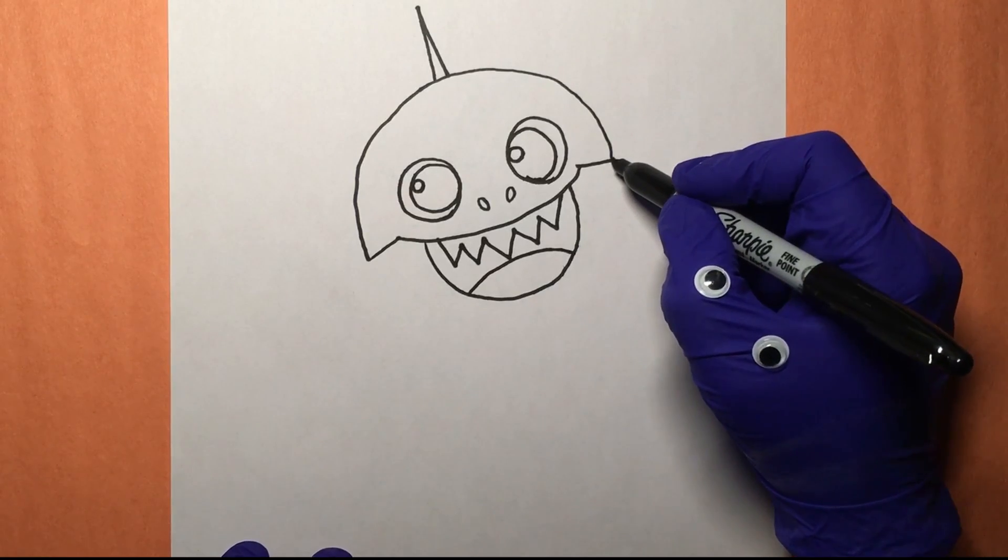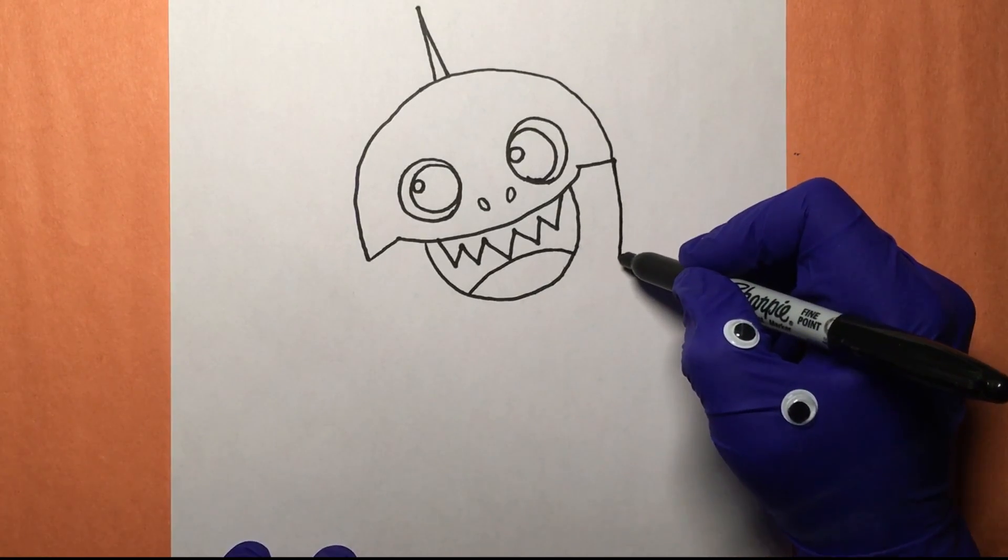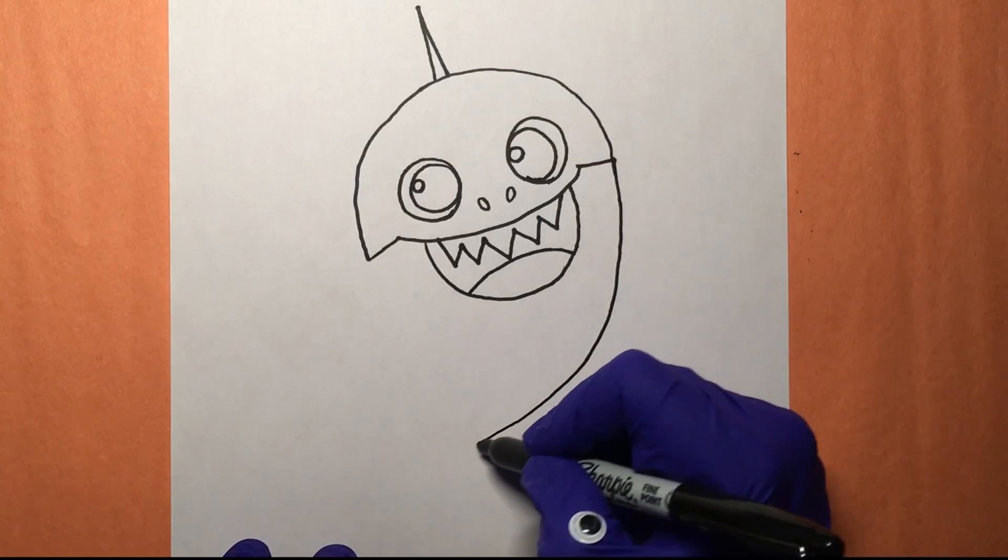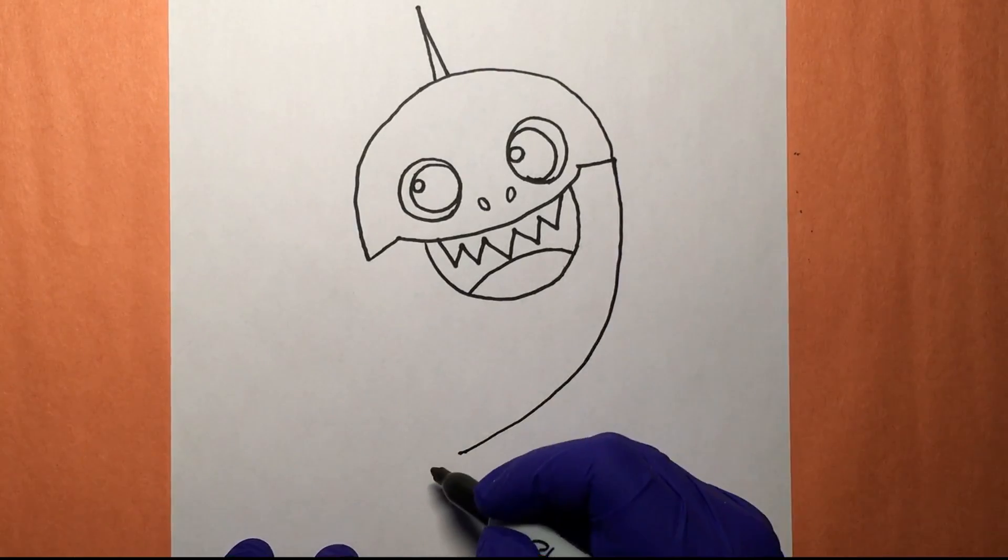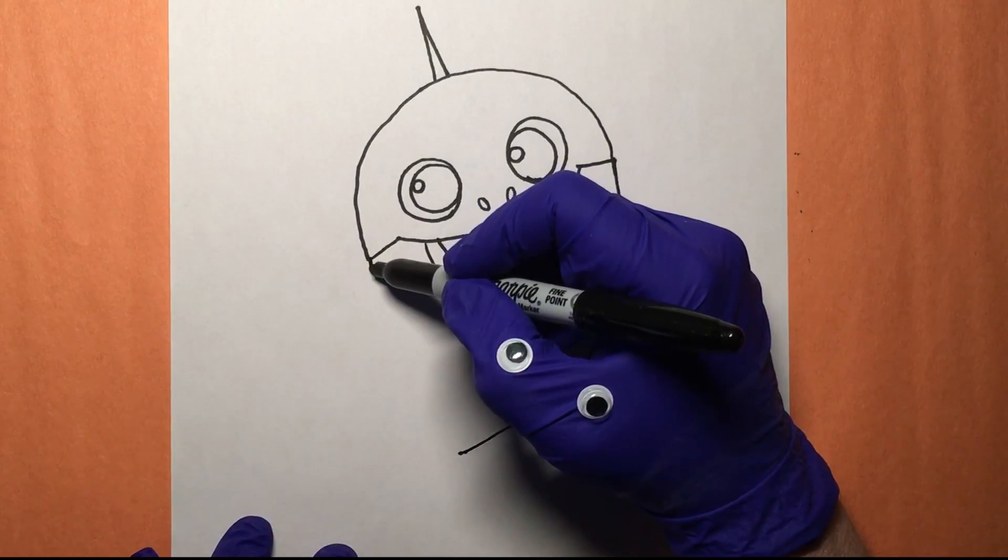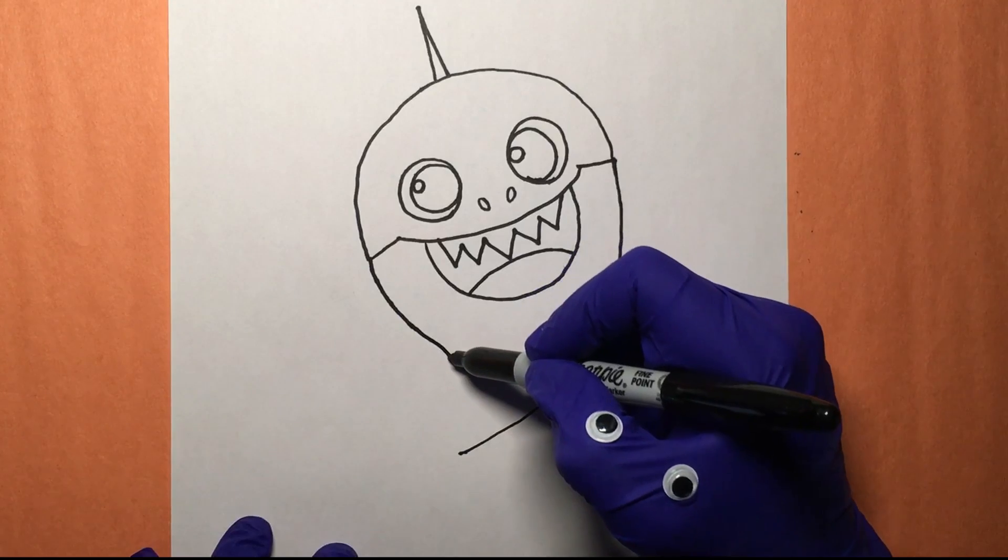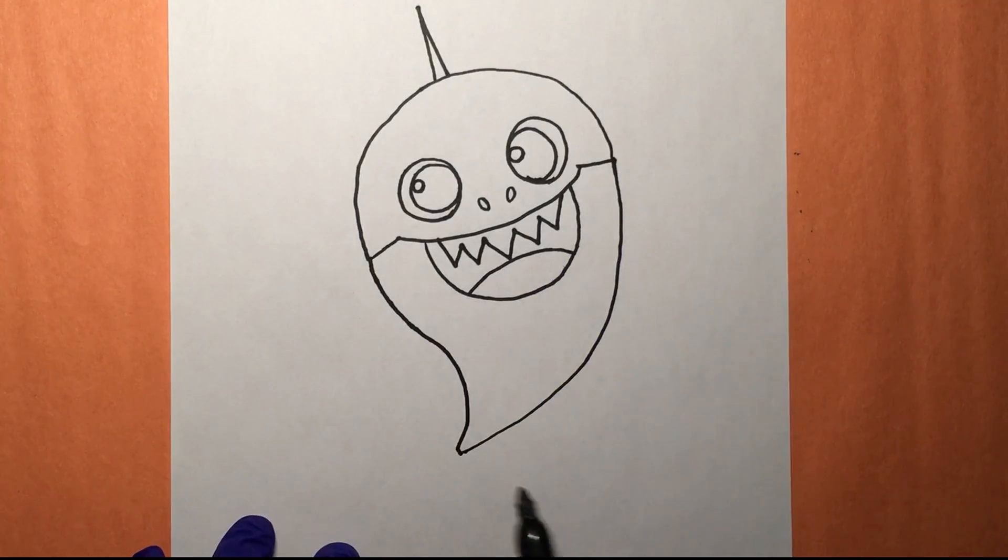And now what we can do is continue his body down. So we're going to come all the way down like this. There we go. Swing it around like that. That's looking good. And then we can do the same over here. We can come to a little point there. That looks nice, don't it?